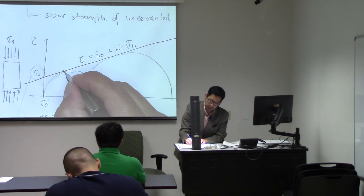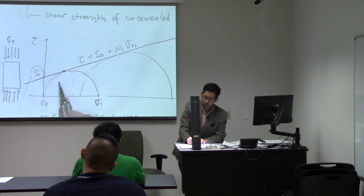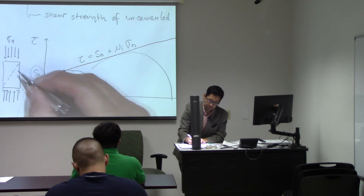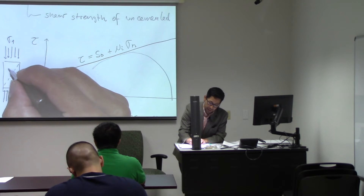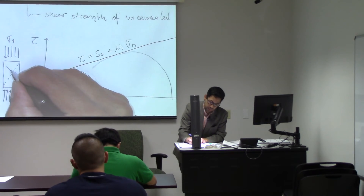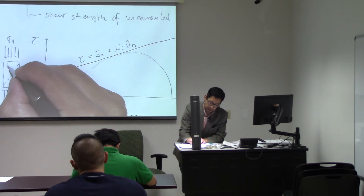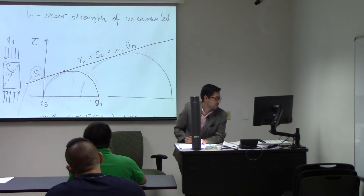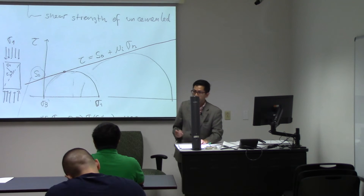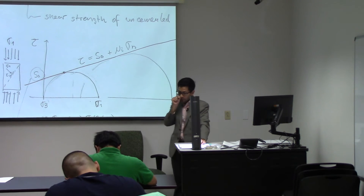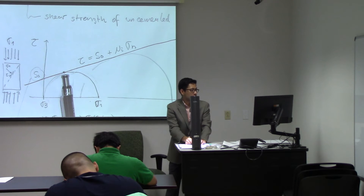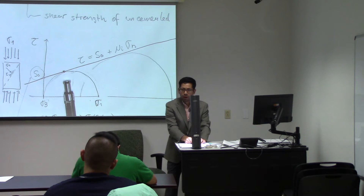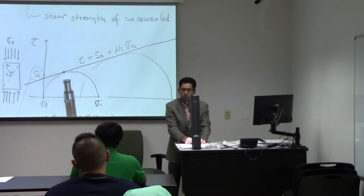If you have failure over here at that point — notice that's the point where the Mohr circle touches the line — you will have a failure. At that orientation, you have here the normal stress and here you have the shear stress. We will see later on that this is the point of the maximum ratio of shear stress to normal stress.